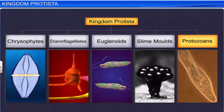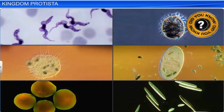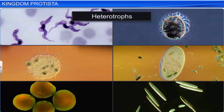Protozoans are protists that are believed to be primitive relatives of animals. The word 'protozoans' means 'the first animals.' All protozoans are heterotrophs and live as predators or parasites. They can be classified into four types: amoeboid protozoans, flagellated protozoans, ciliated protozoans, and sporozoans.